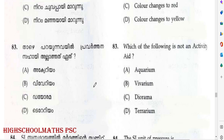Options given: Aquarium, Vivarium, Diorium, Terrarium. The question involves identifying the correct enclosure type. Answer: Option C — Diorium.